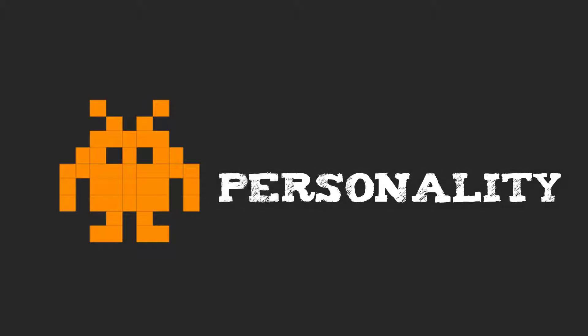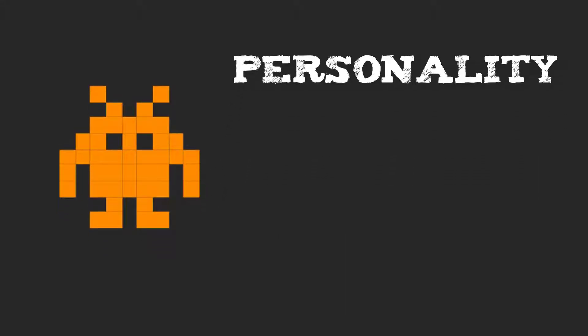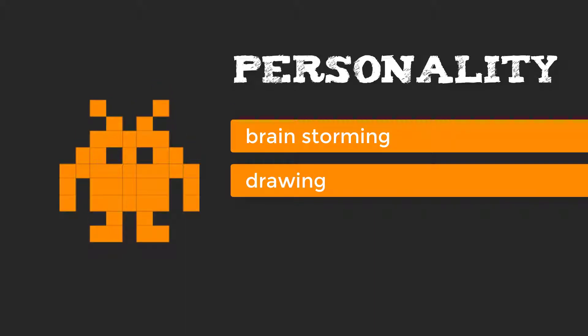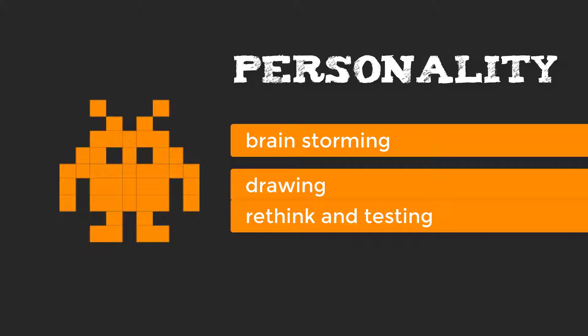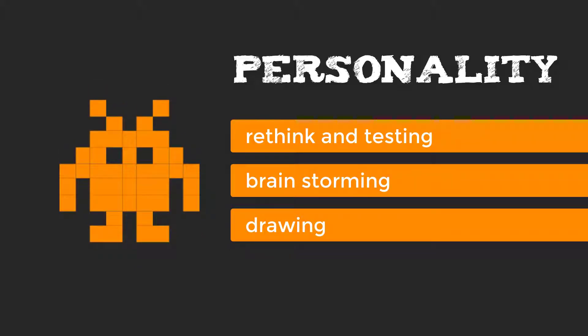There is so much you need to define — you can't just start drawing. It's not only the appearance itself; you need to create a personality. So I want to list 3 basic development processes: brainstorming, drawing, and rethink and testing. The single processes can blend into each other and shouldn't be done strictly one by one.